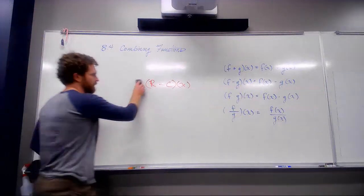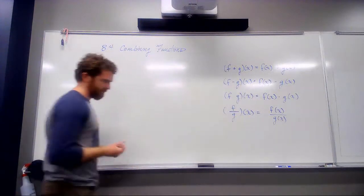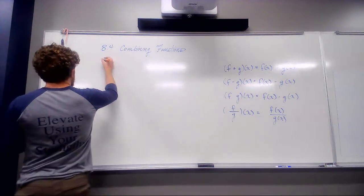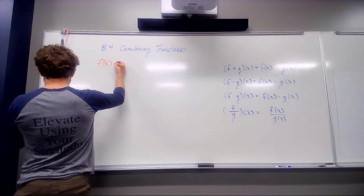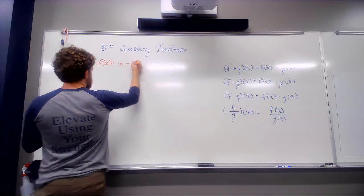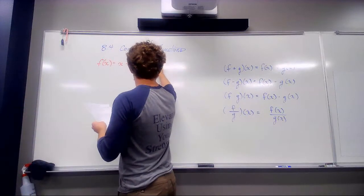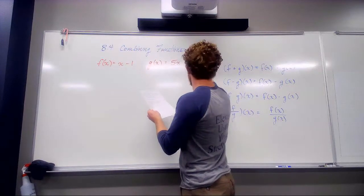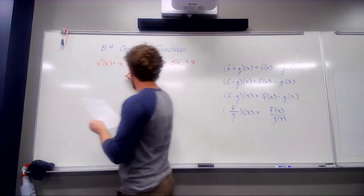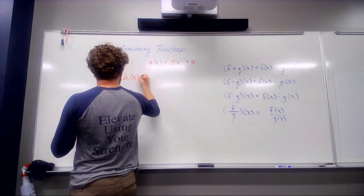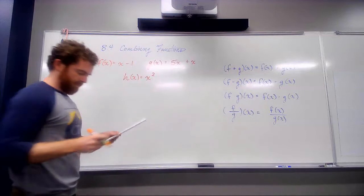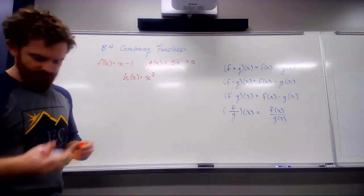All right. So what about a few examples of combining these functions? So if I have f of x is x minus 1, g of x is 5x squared plus x, and h of x is x squared. Let's do a few of these operations.